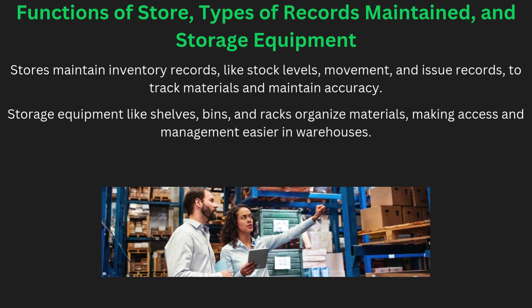The store's main functions include receiving, inspecting, storing, and issuing materials. It also maintains records to ensure smooth flow of materials and to prevent shortages or overstocking. Common records include the stock register, bin card, and goods receipt notes. The type of storage equipment used depends on the nature of the materials, with racks, pallets, and bins being commonly used. Proper storage ensures safe handling of materials and makes them easy to locate when needed.